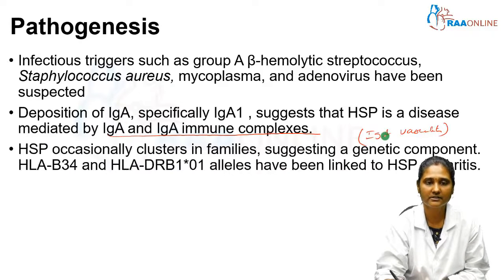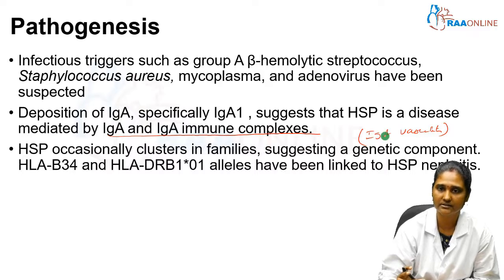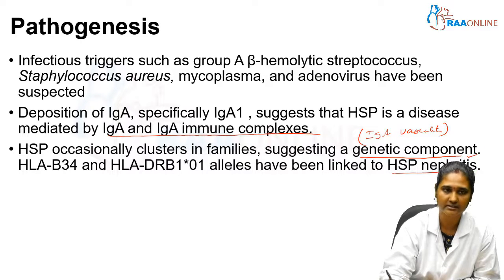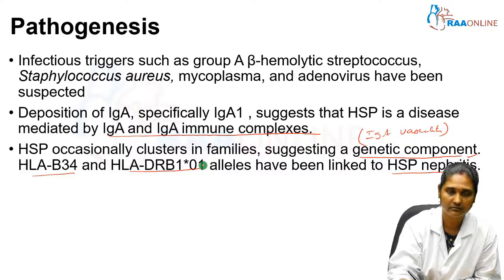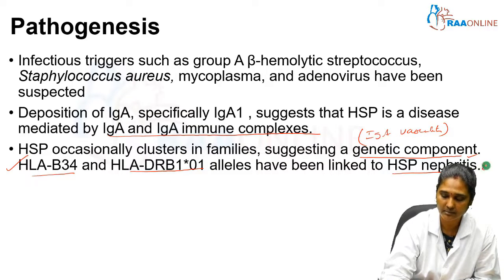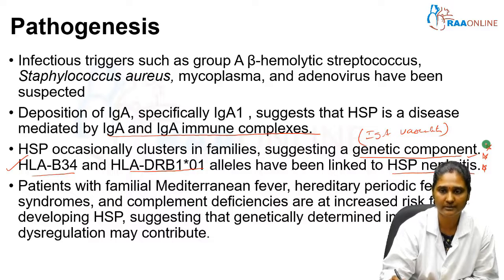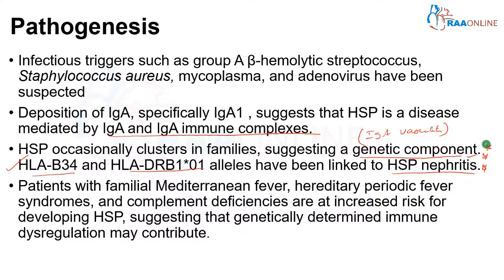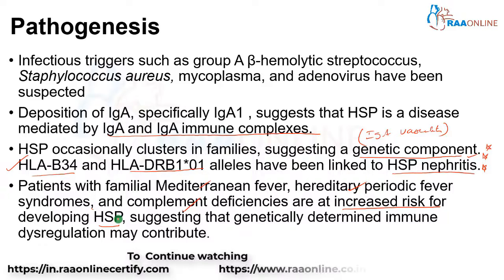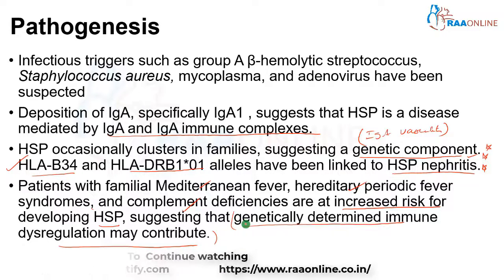HSP generally occurs in clusters within families, suggesting a genetic component. Particularly in HSP nephritis, HLA-B34 and HLA-DRB1-01 alleles have been linked to the disease — these may appear in MCQ-style questions. Patients with familial Mediterranean fever, hereditary periodic fever syndromes, or complement deficiencies are at increased risk of developing HSP, suggesting a genetically determined immune dysregulation that contributes to this small vessel vasculitis.